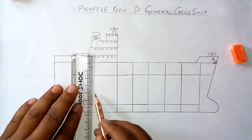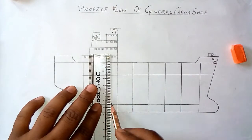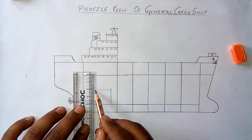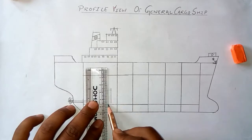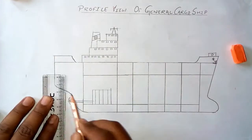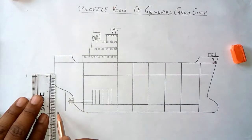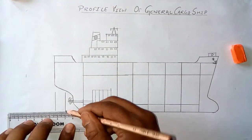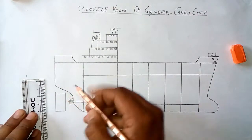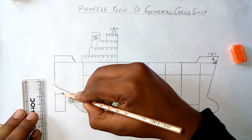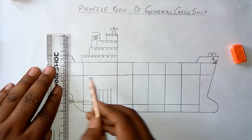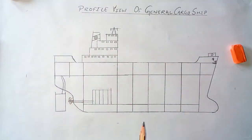Here is the propeller and the propeller shaft going to the main engine, the rudder of the ship, and the rudder stock going to the steering gear.